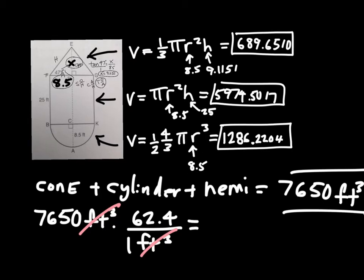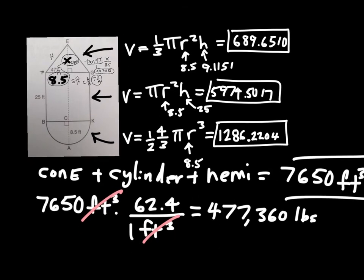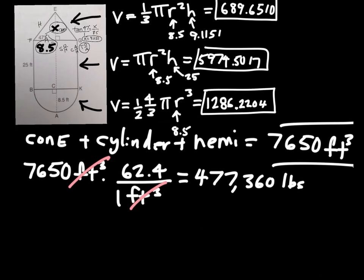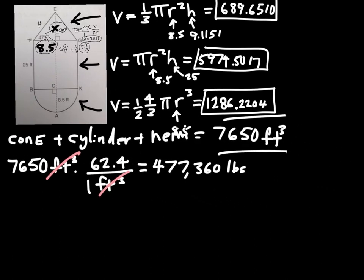As it turns out, that's holding a tremendous amount of water. If it was filled all the way to the top, it would fill up about 477,360 pounds of water. So that's what it would be like if the water tower was filled all the way, completely full. It says that the water tower is only filled 85% of the way.